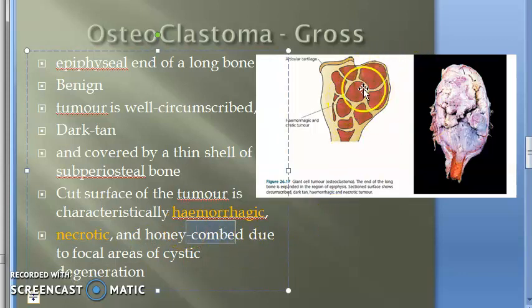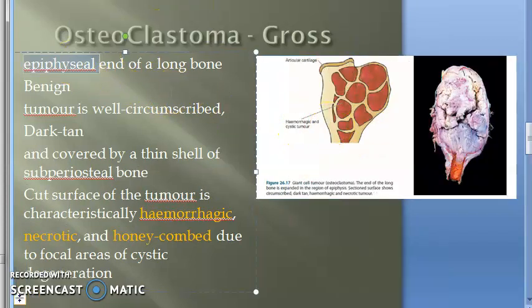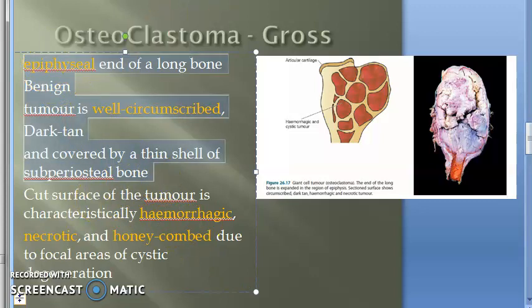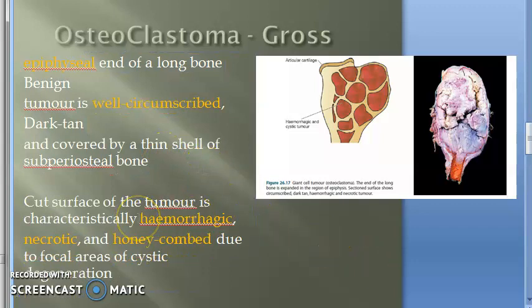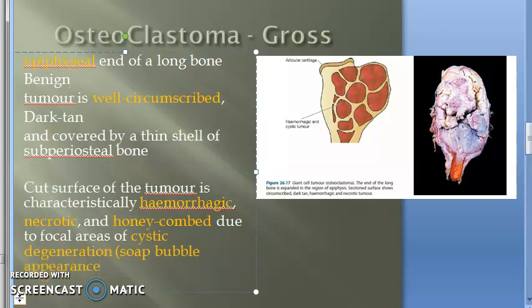The cut surface is hemorrhagic, necrotic, and honeycombed due to focal areas of cystic degeneration. You can see that honeycomb kind of pattern here — focal areas of cystic degeneration giving a honeycombed appearance. The soap bubble appearance is also a key keyword for osteoclastoma.